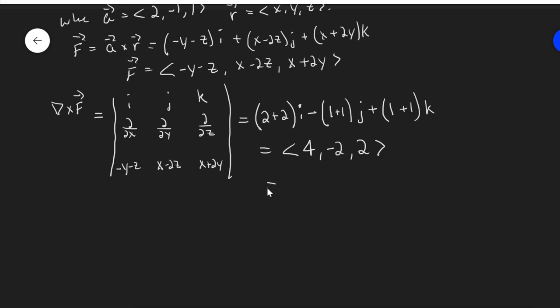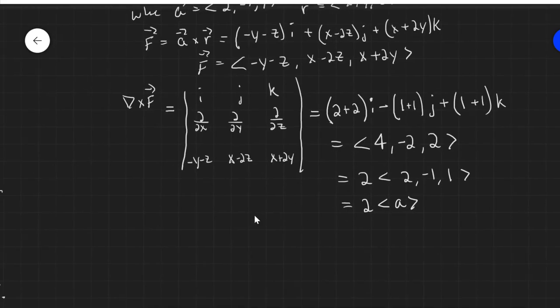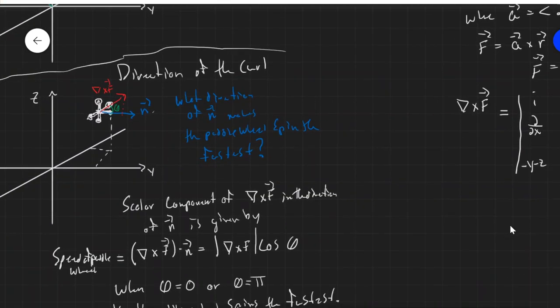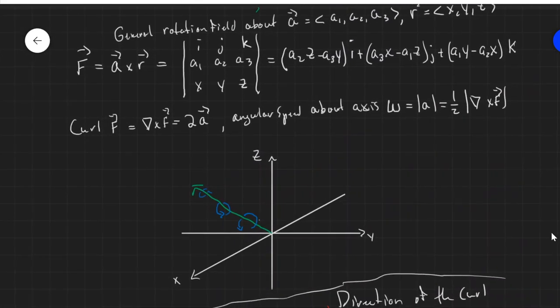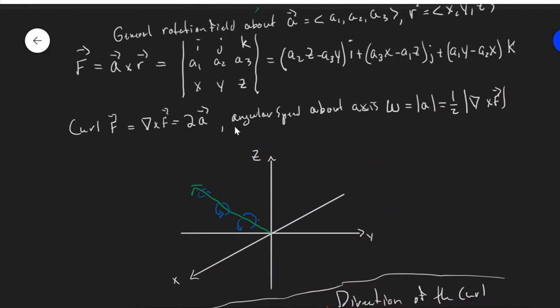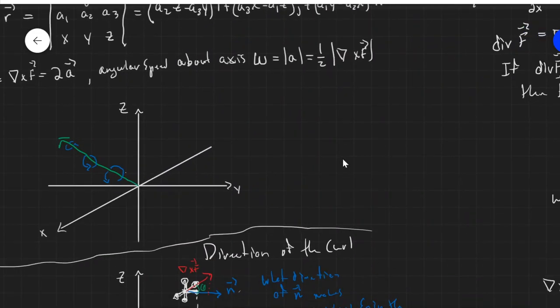Now I'm going to decompose this a little bit. This is 2 times 2, negative 1, 1. Just so we can see that this is really 2a. And this follows from the formula that we worked out before, that the curl of a general rotation field, if I can find it, the curl of a general rotation field is 2 times the axis of rotation.